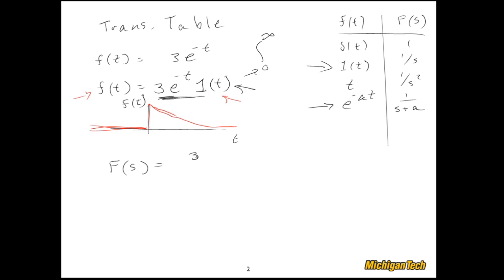This is wrong, by the way, but I'm going to show you anyway. They go 3 over s plus a. That's this piece. And then there's a step in there. So they say, Well, I must have to multiply it by 1 over s. Well, that's completely wrong. Okay, so you never want to do that.